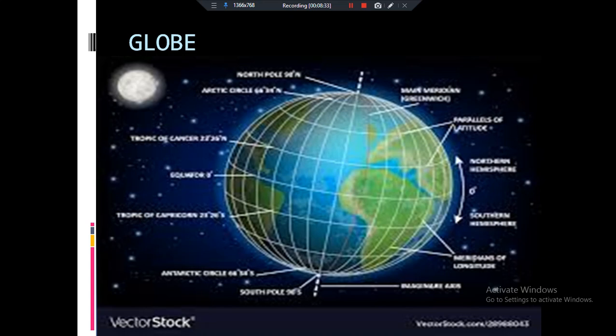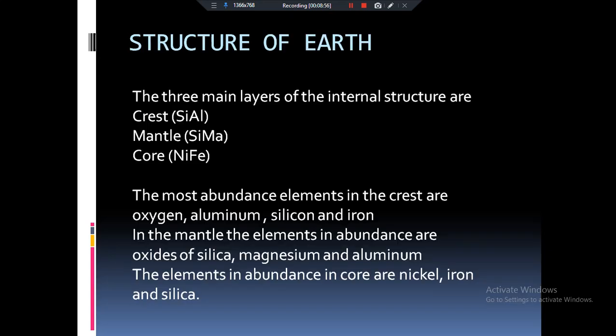Now this is the globe. Can you see at the equator the radius and at the poles? Can you see the tropic of Cancer, equator, tropic of Capricorn, Arctic Circle and the Antarctic Circle? What are these? We will talk about these in the later classes in which we will be discussing about the longitudes and the latitudes. Let us come to the structure of the earth.